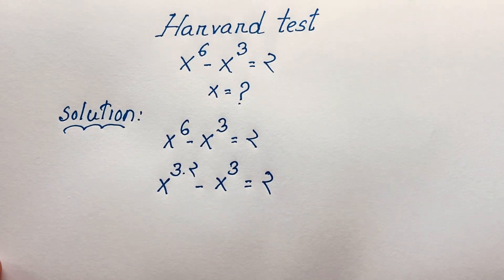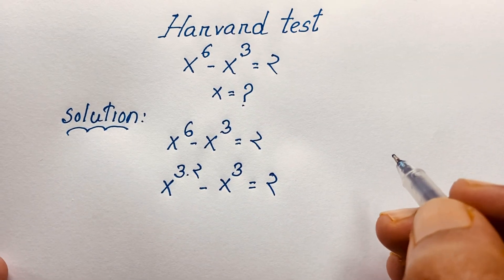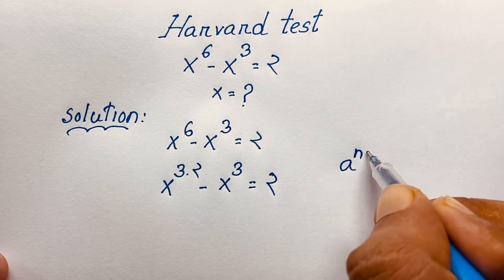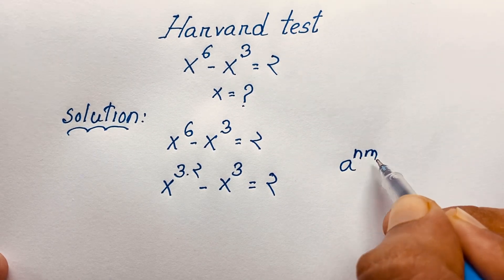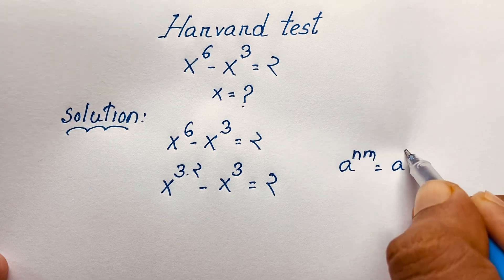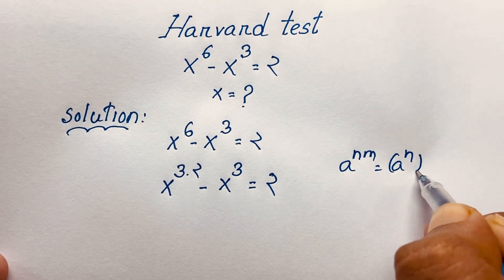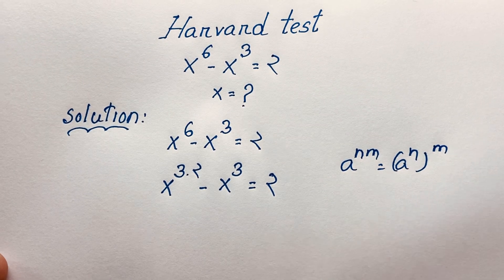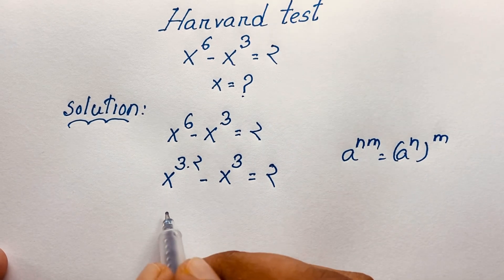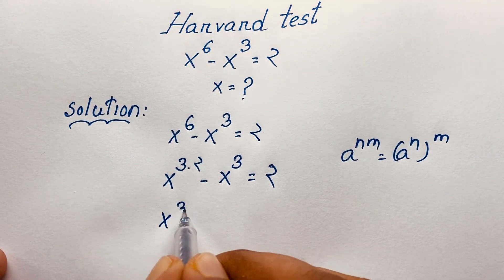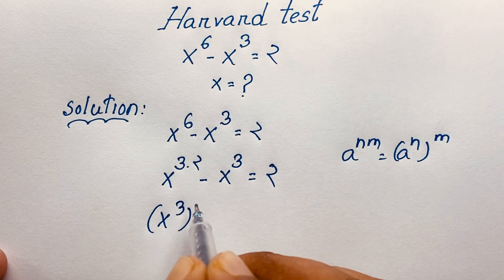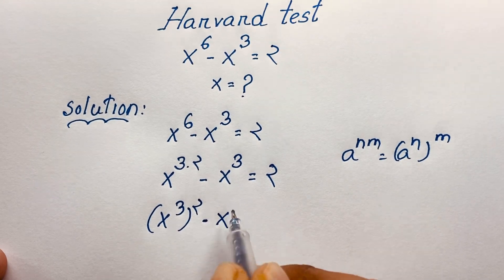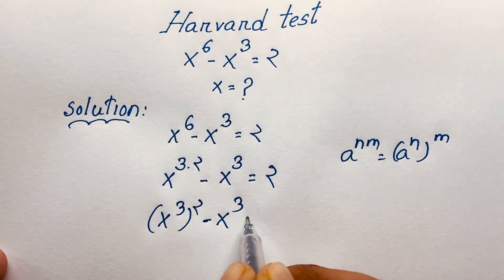Now, we know the exponential formula: a to the power n·m equals a to the power n, whole to the power m. If I apply this math formula here, you can see this expression becomes x to the power 3, bracket whole to the power 2, minus x to the power 3, is equal to 2.